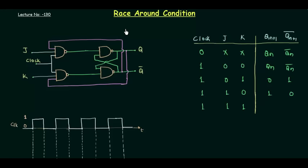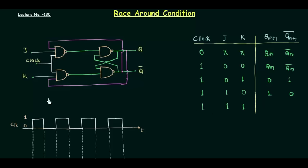In the last two presentations we completed the JK flip-flop from its working to different tables. When we were discussing the JK flip-flop, I mentioned we use it because there were disadvantages in the D and SR flip-flops. In the SR flip-flop, when S is 1 and R is 1, the output is unpredictable. To overcome this, we use the JK flip-flop, made possible by the feedback shown in purple color.